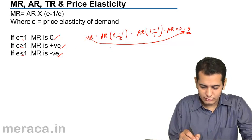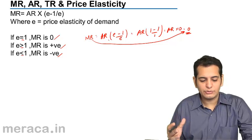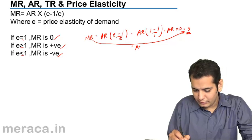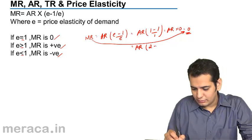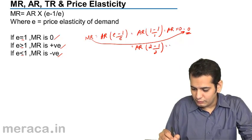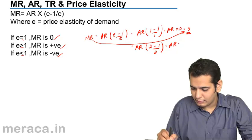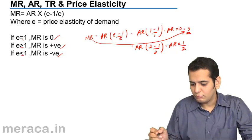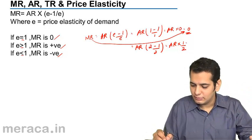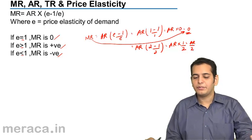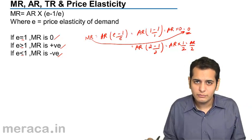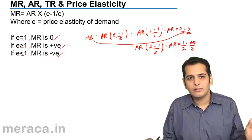In the next case, let us take E as 2, since 2 is greater than 1. So the answer would be AR times (2 minus 1) upon 2. This will be AR times 1 by 2, which is half of AR, that is AR by 2. Since AR will always be positive, half of it will also be positive.